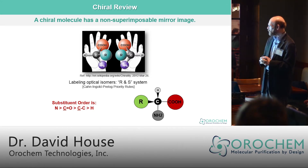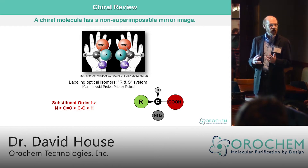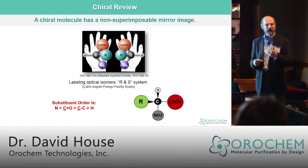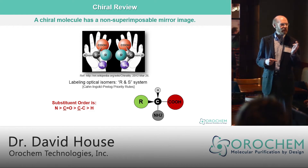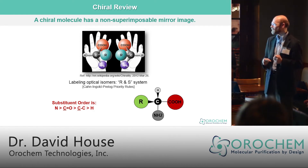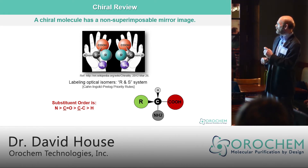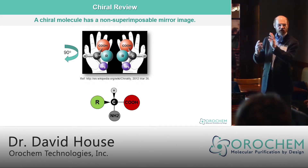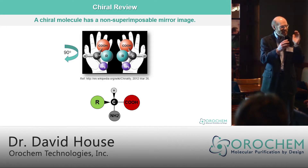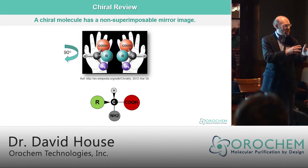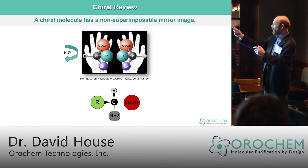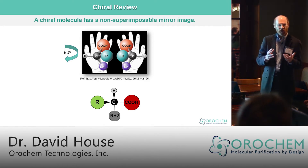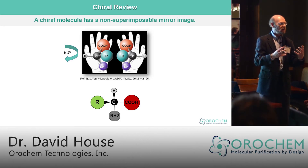Labeling the optical isomers, we use the RS system, which determines the substituent priority based upon the atomic number of the atom nearest the carbon. For example, if we look at the molecule in the left hand and rotate it so that the hydrogen is pointed into the plane of the screen, that will bring the R group rotating 90 degrees out.